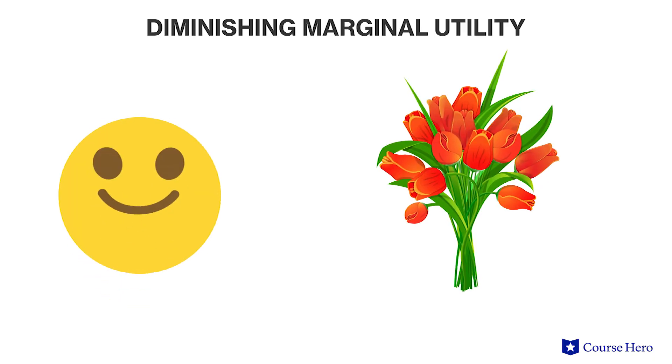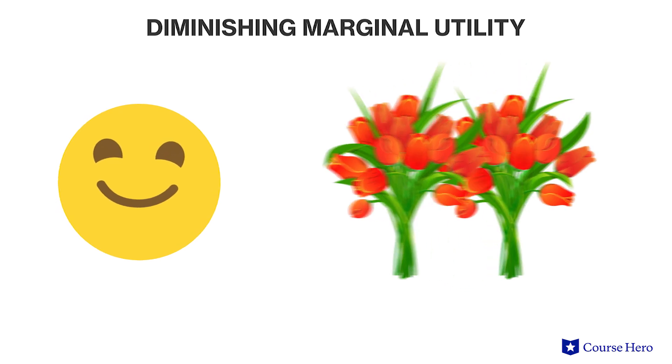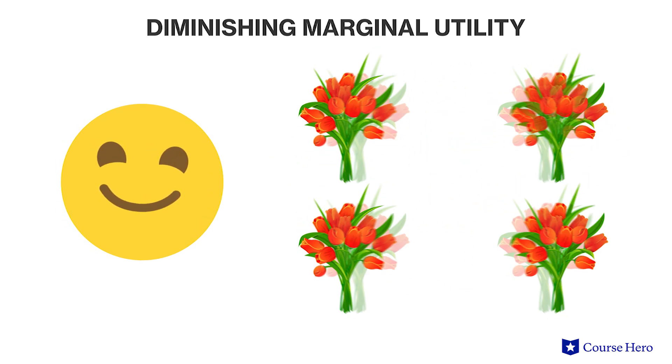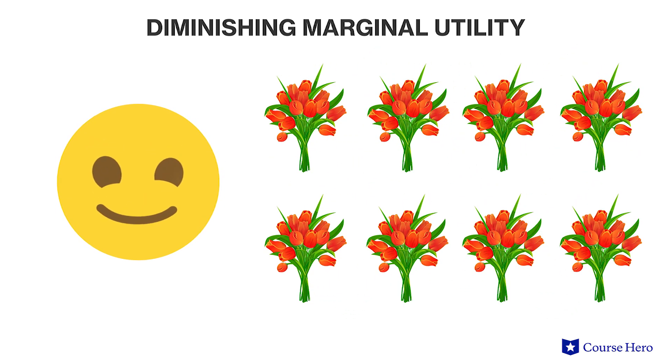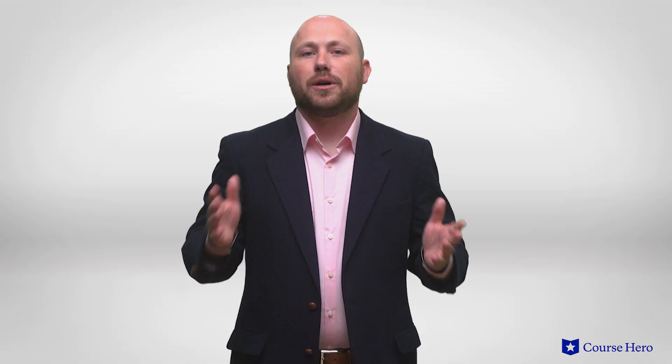More generally, an item exhibits diminishing marginal utility when marginal utility decreases as the quantity of the good consumed increases. Put another way, a good exhibits diminishing marginal utility when each additional unit of a good does not provide as much happiness as the one before.